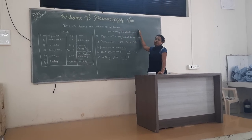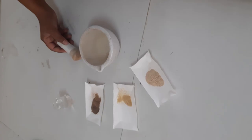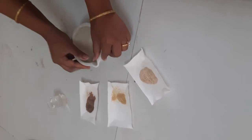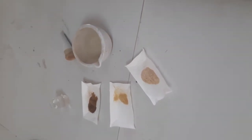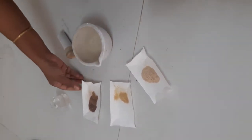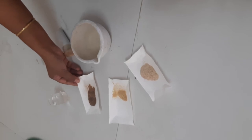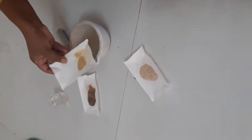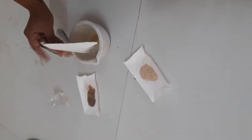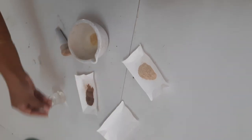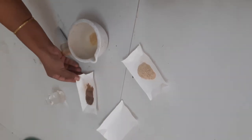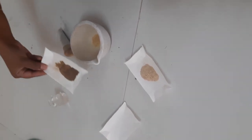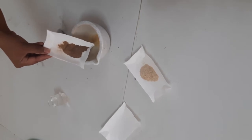Let's see how to prepare our shampoo. We are going to prepare the shampoo. First of all we have taken 2.5 gram of methi seeds — this is our methi powder.